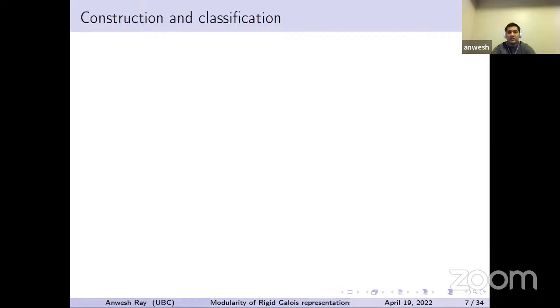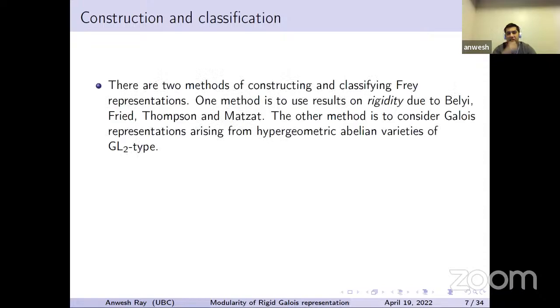How do we construct and classify these representations using the rigidity method? We use results of Bandley-Fried, Freed, Thompson, and Marta, and there is another method involving Galois representations associated to certain hypergeometric abelian varieties, which we will discuss later.